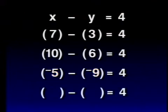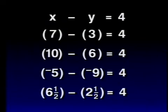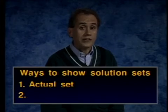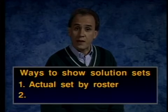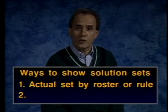And what about Y equals 2 and 1 half? That would make X equals 6 and 1 half. This is really getting messy. How can we ever show all of the solutions to this equation? Well, remember, we have two ways to show solution sets. One is to make an actual set of the solutions, either by the roster method — a listing — or by the rule method, using set builder notation. Let's see how that would work.